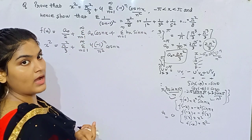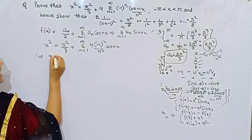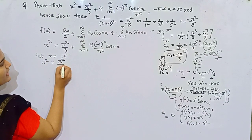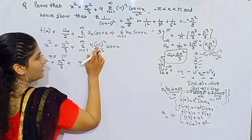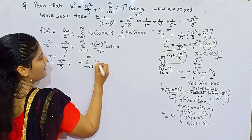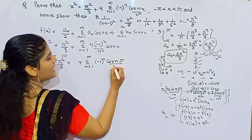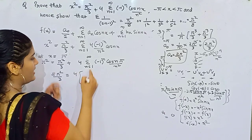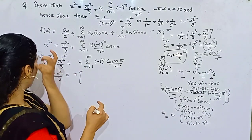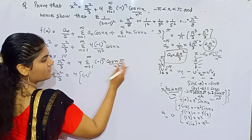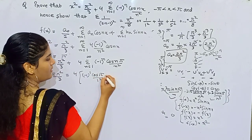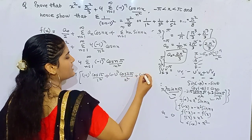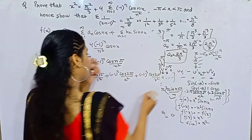Now from this we need to show the π²/8 result. If you put x = π: π² = π²/3 + 4 times summation of (−1)^n cos(nπ)/n². Rearranging: π² − π²/3 = 2π²/3 = 4 times the summation. Expanding the summation: n=1 gives (−1)¹ cos(π)/1², plus n=2 gives (−1)² cos(2π)/2², plus n=3 gives (−1)³ cos(3π)/3², and so on. Dividing both sides, π²/6 equals this summation.